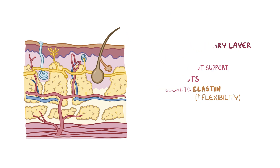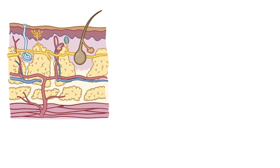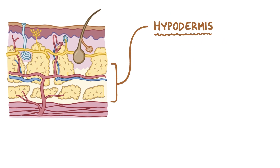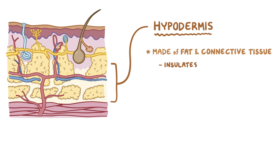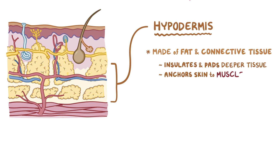Just below the reticular layer is the hypodermis. It's made of fat and connective tissue that insulates and pads the deeper tissue, and anchors the skin to the underlying muscle.